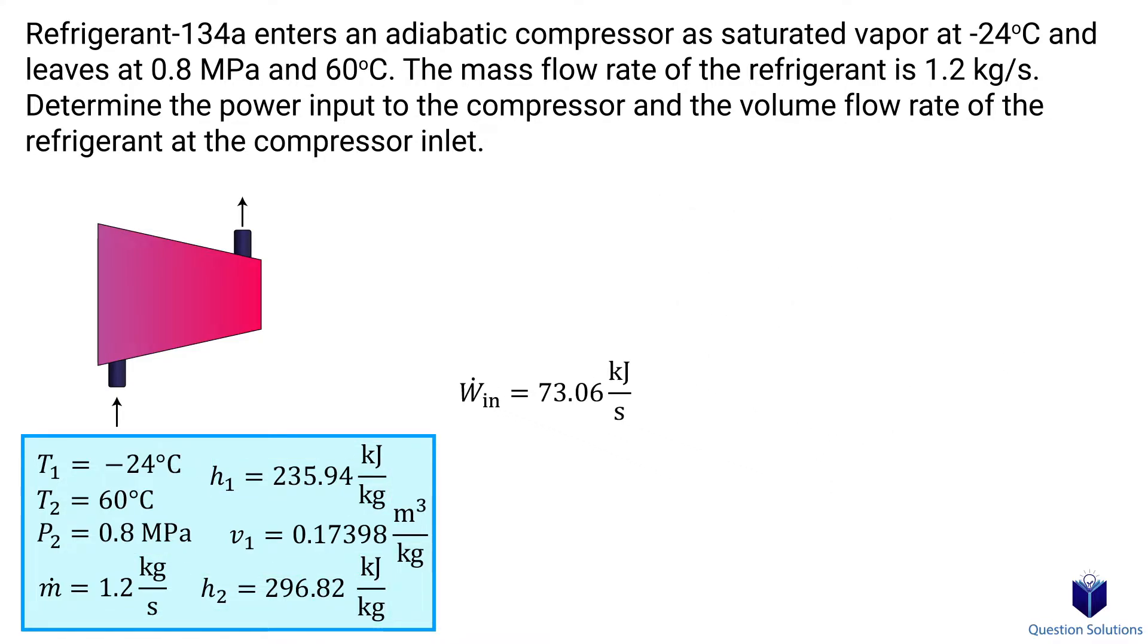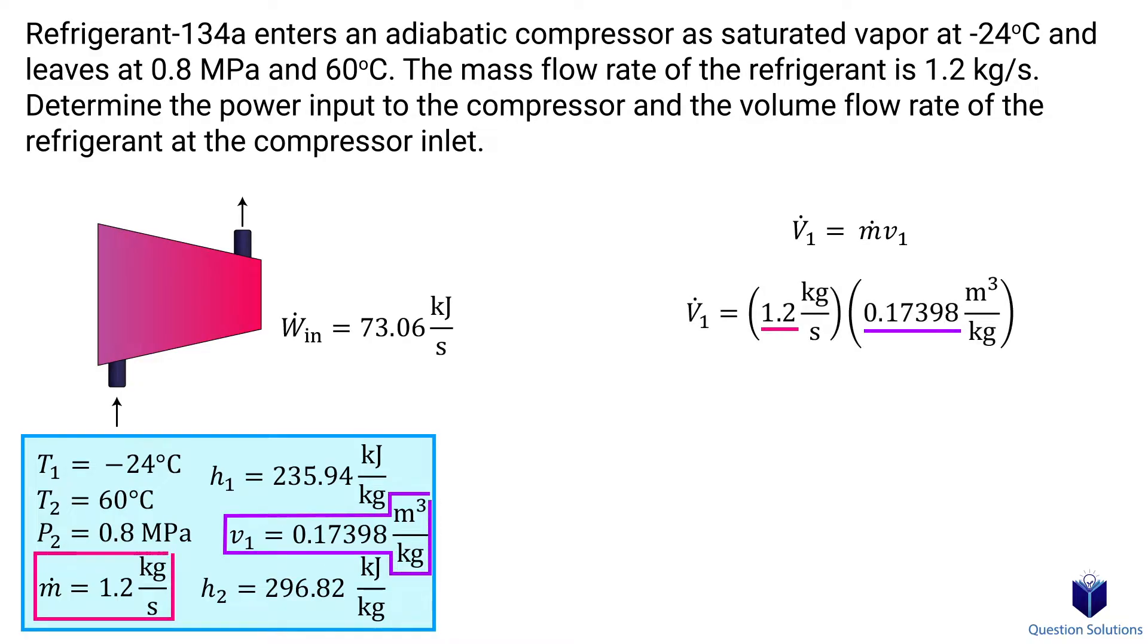The next part of the question wants us to find the volume flow rate of the refrigerant at the inlet of the compressor. For that, we can use the equation for volume flow. So that's mass flow times specific volume. We can plug values in straight away since we already found the specific volume from before. Solving gives us the volume flow at the inlet of the compressor.